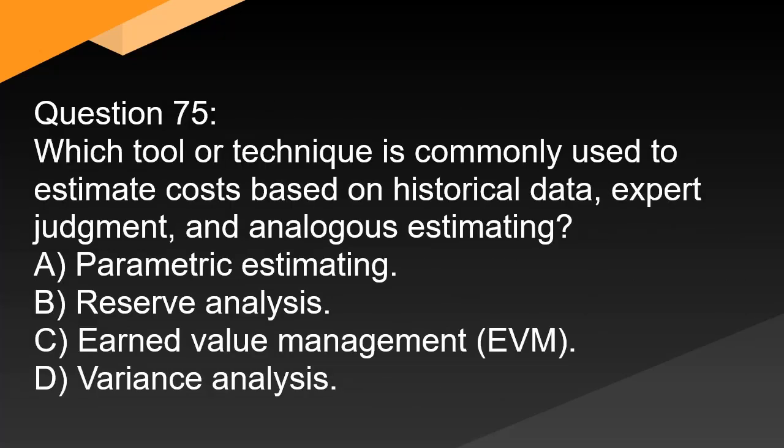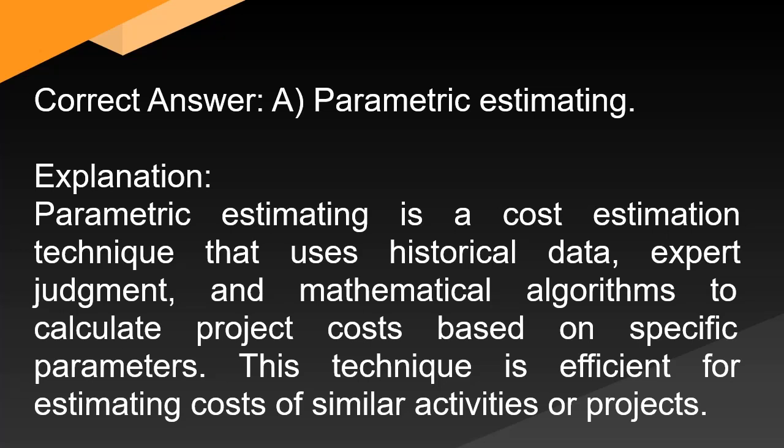Question 75: Which tool or technique is commonly used to estimate costs based on historical data, expert judgment, and analogous estimating? A. Parametric estimating. B. Reserve analysis. C. Earned value management (EVM). D. Variance analysis. Correct answer: A. Parametric estimating. Explanation: Parametric estimating is a cost estimation technique that uses historical data, expert judgment, and mathematical algorithms to calculate project costs based on specific parameters. This technique is efficient for estimating costs of similar activities or projects.